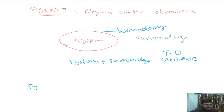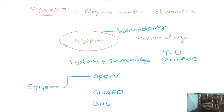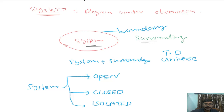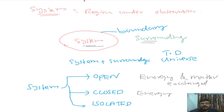You can classify the thermodynamic system into three types: open system, closed system, and isolated system. In an open system, the system and surrounding can exchange both energy and matter. In a closed system, only energy can be exchanged but matter cannot be exchanged. In an isolated system, neither energy nor matter can be exchanged.